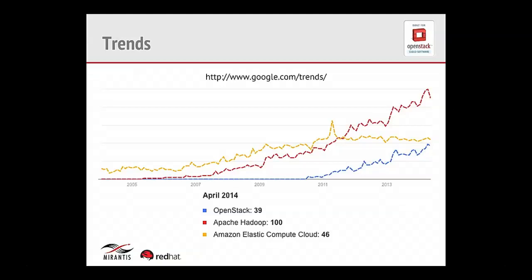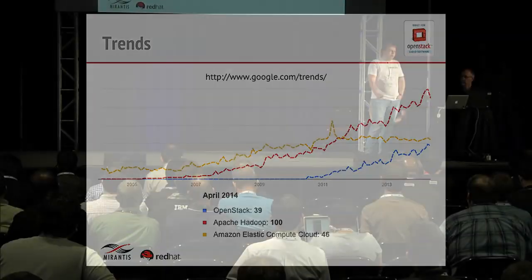Hadoop consists of two core projects, HDFS and Yarn, that provide a distributed file system and distributed data processing engine. There are a lot of different services and projects built on top of Yarn — for example, for streaming processing, batch processing, and a lot of other tools. It's a very big and fast-growing platform in the big data world. So why do we think it's a good idea to bring Hadoop to OpenStack? As you can see on this Google Trends chart, it shows graphs for OpenStack, Amazon Elastic Cloud, and Apache Hadoop.